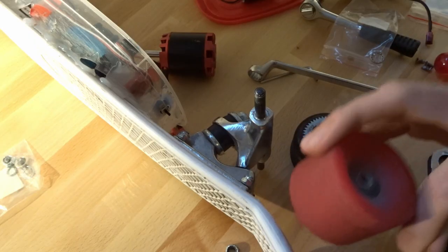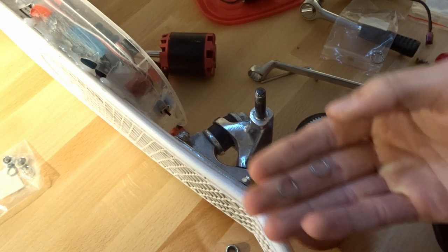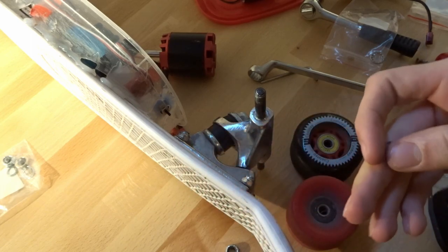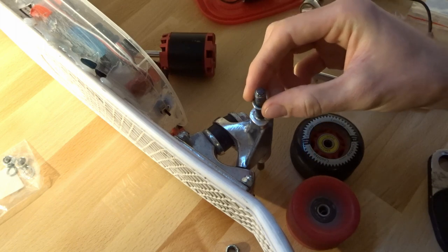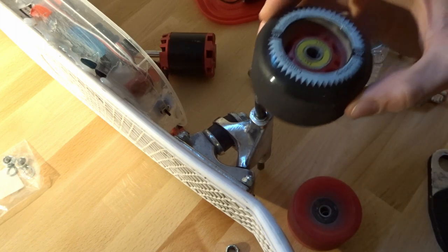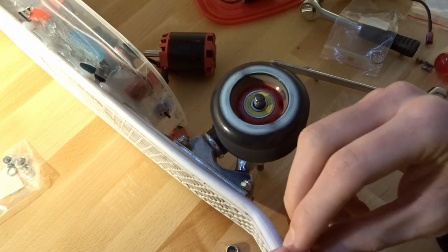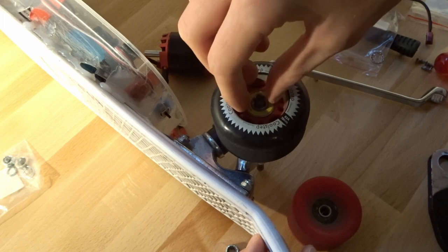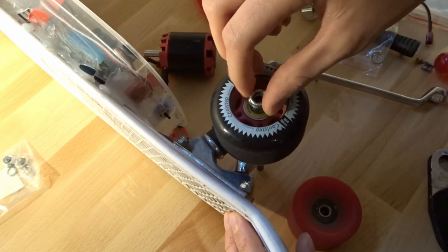When you remove the original wheels from your skateboard, you're gonna find out that there are two little discs like this. Make sure when you mount your new wheels that you put one of those discs on the inside of the wheel and the other disc on the outside of the wheel, and then you are ready to tighten the wheel.